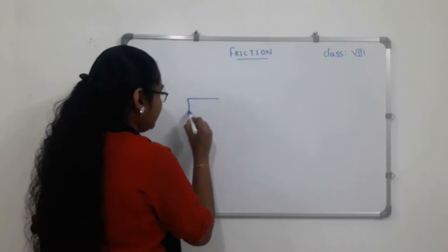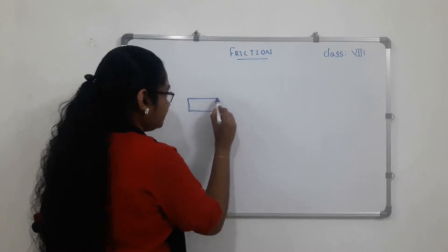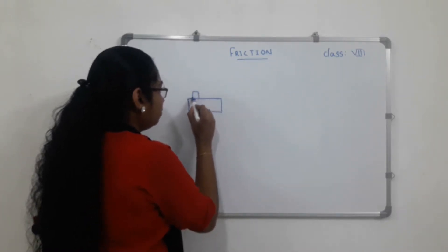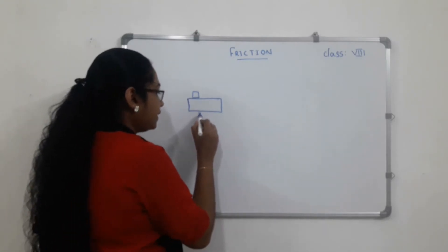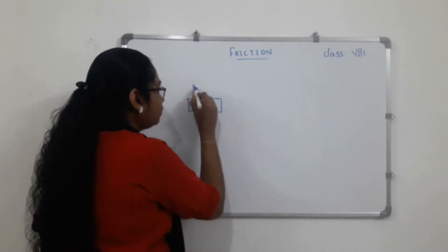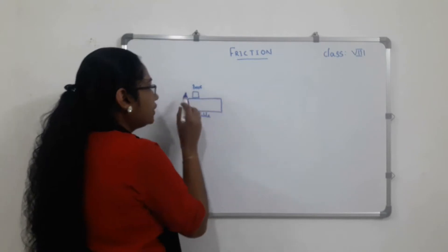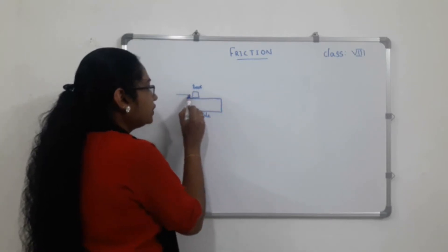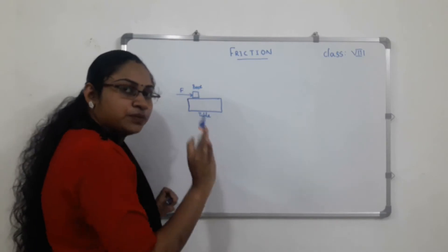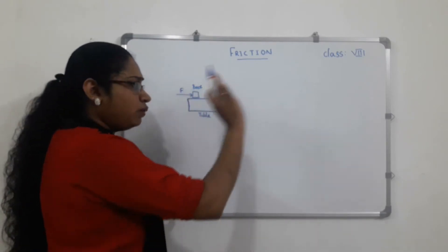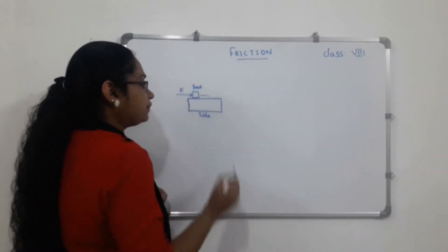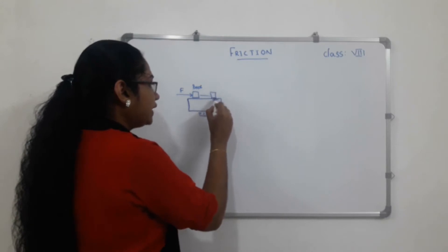Here is a table. Take a book and place it in the middle of the table. I will put the book in the middle of the table and apply a force here. The book is moving. How can it move? It goes to speed.